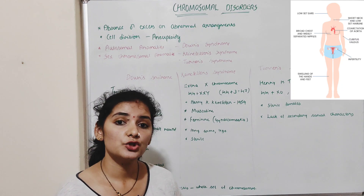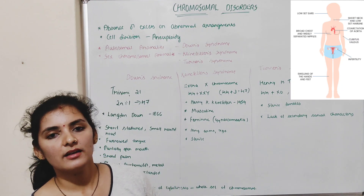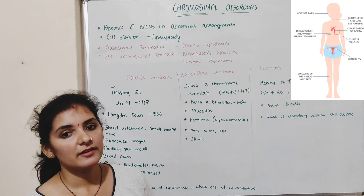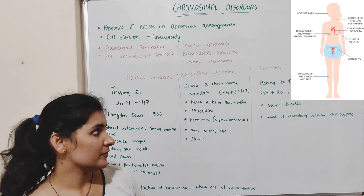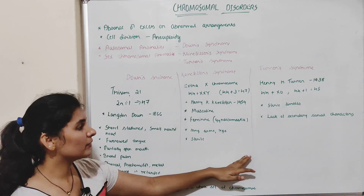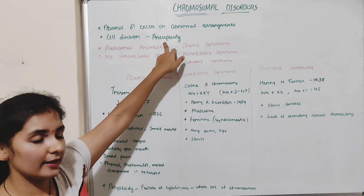Because of the absence of one X chromosome, secondary sexual development is also incomplete. That is why they show underdeveloped ovaries, underdeveloped breasts, uterus, body hair, etc. So that covers the three syndromes that come under aneuploidy.